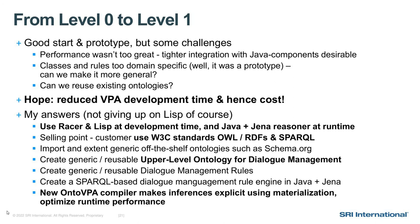For a level-zero prototype developed in about two weeks, that wasn't too bad. However, there were a number of shortcomings. First, performance wasn't great, and tighter integration with Java-based components — ASR, classifier, slot filler, and output presentation — was desirable. The prototype also lacked generality: classes and rules were too domain-specific and couldn't be reused for future projects. Management was keen on incorporating off-the-shelf ontologies to reduce cost, but wasn't too convinced of Lisp in this context. This led to embracing OWL, the web ontology language, and SPARQL for OntoVPA, so we could put the W3C standards label on our product.